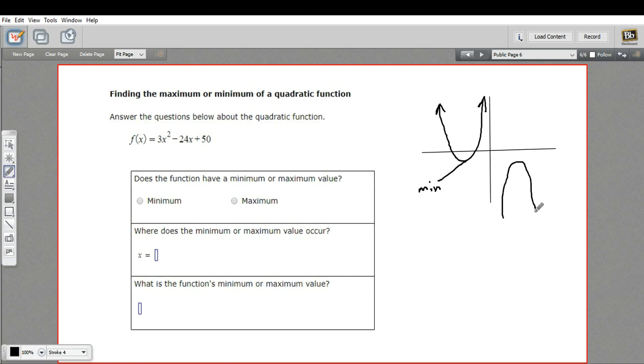If you had a downward opening parabola, it would be the opposite, and you would have a maximum value right at the vertex. In either way, we're looking for the vertex. So far, we can say that this one does indeed have a minimum value because it's an upward opening parabola.